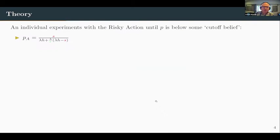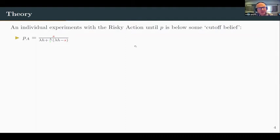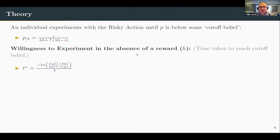What a subject should do is start out by experimenting with the risky action and keep doing that until their belief goes below some cutoff belief, at which point they switch to the safe action. You can calculate that cutoff belief by equating the expected payoff flows of the risky action and the safe action, giving this particular formulation. I've color coded some things that will become more obvious later on. The interesting behavior we're focused on is the willingness to experiment in the absence of rewards.